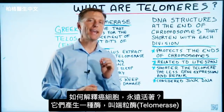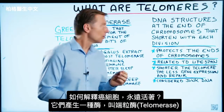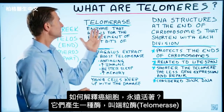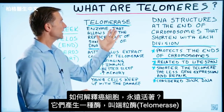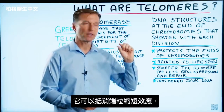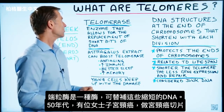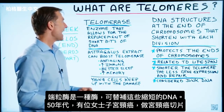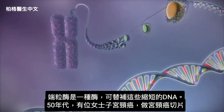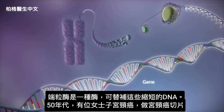How do you explain cancer cells that can live forever? They produce an enzyme called telomerase, which can counter this shortening effect. Telomerase is an enzyme that allows for the replacement of these short bits of DNA.